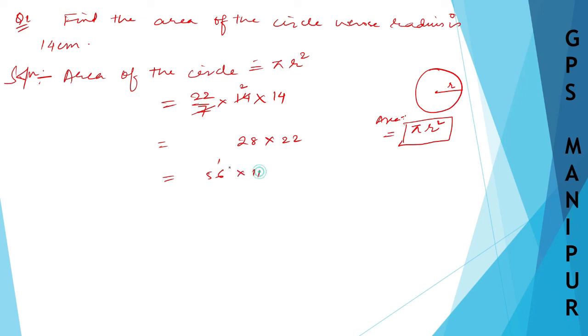56 × 11, I can write this as 56 + 560 = 616 centimeter squared. Area is written in centimeter squared and this is your answer. That's all, thank you so much. We will meet in the next video.